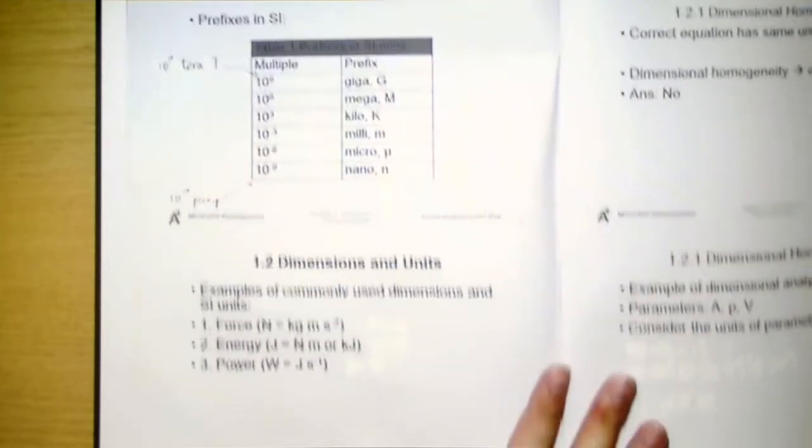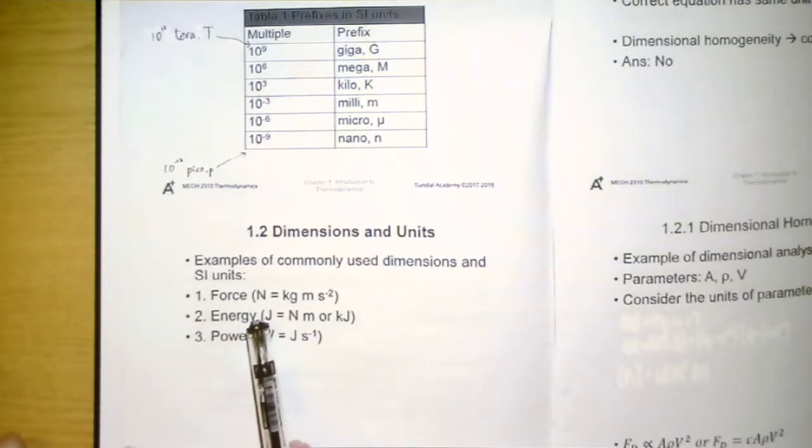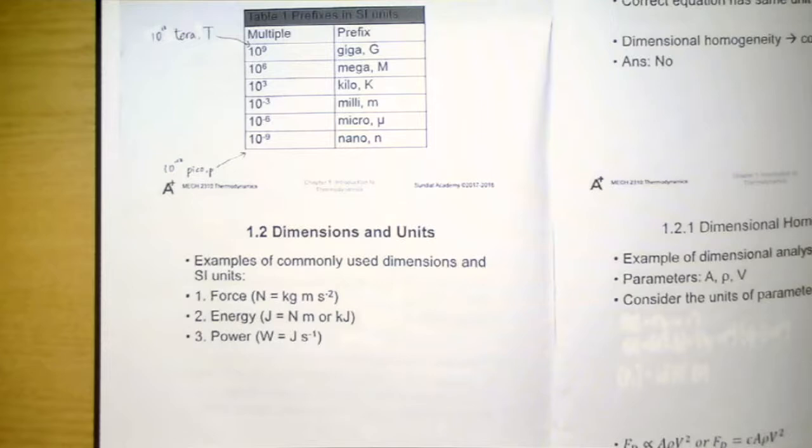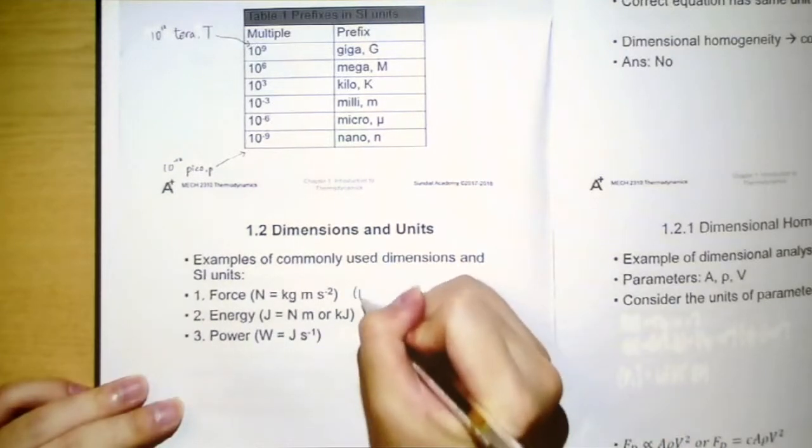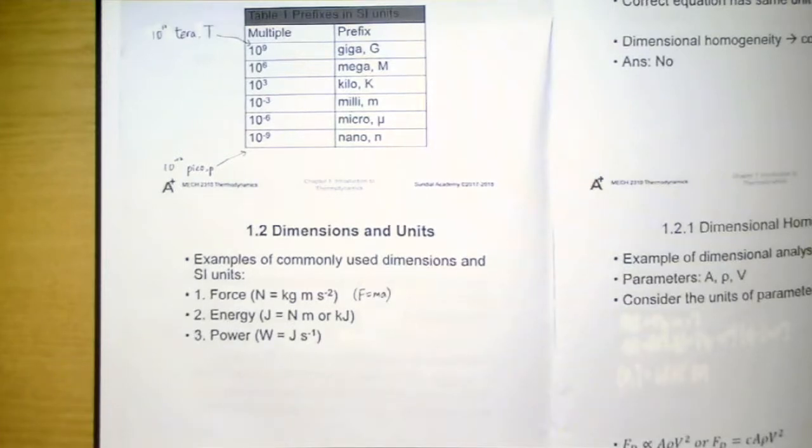Some examples of commonly used dimensions and their SI units include the following. The first one is force, that is Newton. In terms of primary units, it will be kilogram times meter per second squared. The unit is derived by using Newton's second law, that is F equal to ma, where m is the mass, while a is the acceleration.